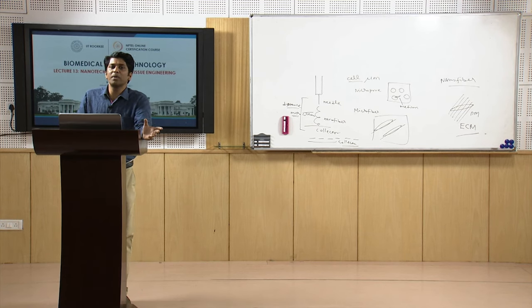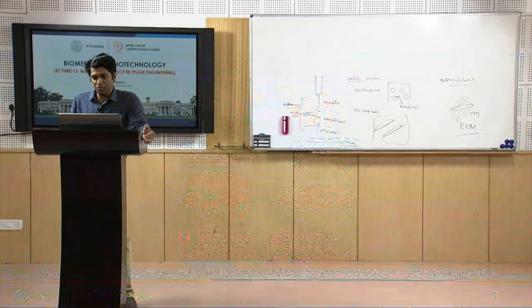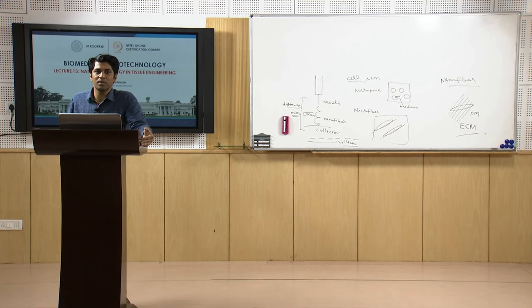Tissue engineering is not only useful for making artificial tissues to replace damaged organs — it can also be used for making edible tissues, that is, test tube-based burgers. Tissues are taken from animal muscle, stem cells are extracted, muscle cells are grown under tension to bulk them up, the new muscle fibers are minced and turned into burgers. This will avoid the slaughterhouse and killing of many animals.